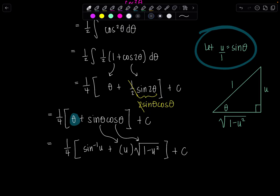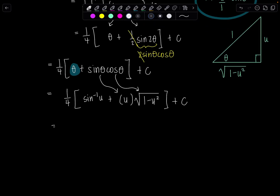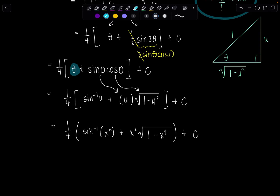Last thing — we've got to go back. Remember, we let u equal x² originally. So I'll write this as 1/4 times [arcsin(x²) plus x² times the square root of 1 minus (x²)²], and 1 minus (x²)² is 1 minus x to the 4th, just like they had in the problem originally. Plus C. Voilà.